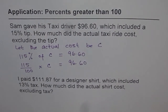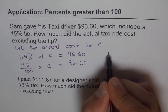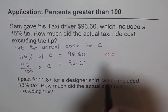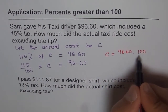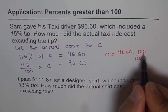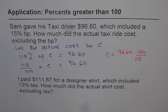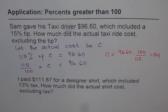From here you can solve for cost C. So C equals — we will cross multiply. C equals 96.60 times the denominator, which is 100, and 115 will go down. So that is 96.60 times 100 divided by 115. Use your calculator to figure it out, and that equals 84.